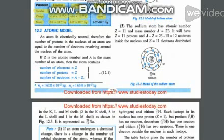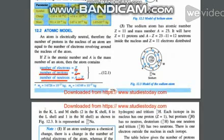The mass of the proton, the mass of the neutron — there are chances of these being asked. Number of electrons is Z, number of protons is Z, and number of neutrons is A minus Z.